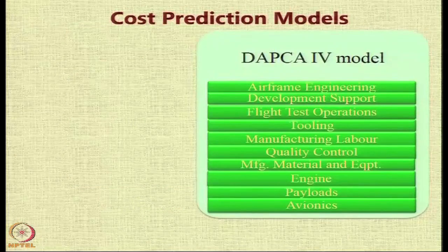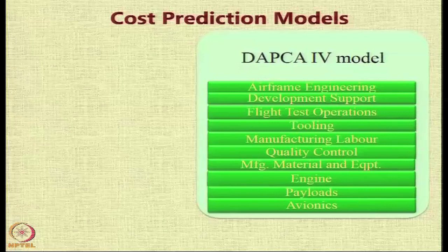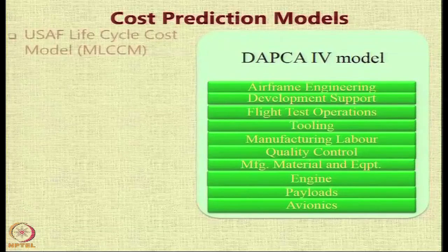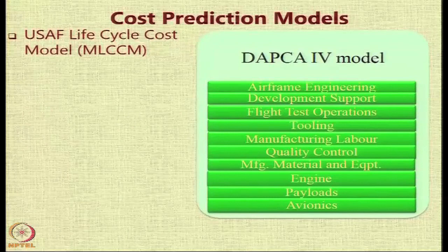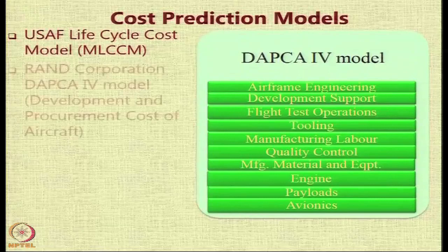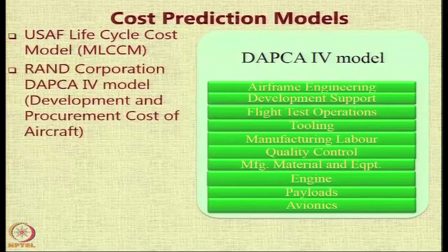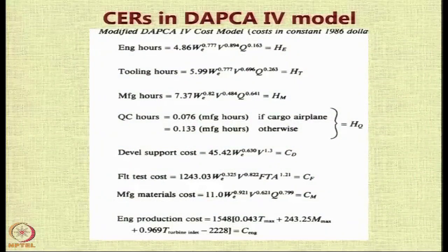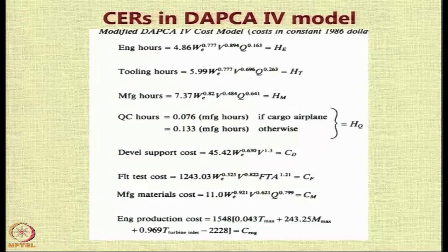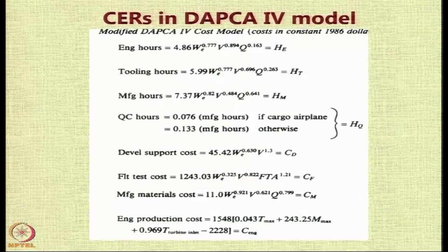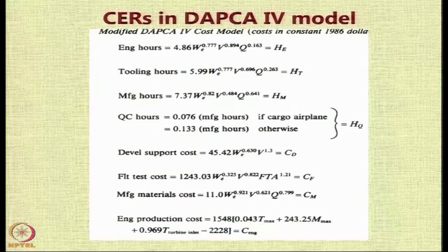The cost prediction models — I mentioned the RAND-DAPCA-4 model, which is a standard model, but there are others as well. For example, the US Air Force has a life cycle cost model called MLCCM. The DAPCA-4 equations are applicable for 1986 dollars and have to be scaled up using an inflation factor. These equations are available online or in standard textbooks like Raymer.